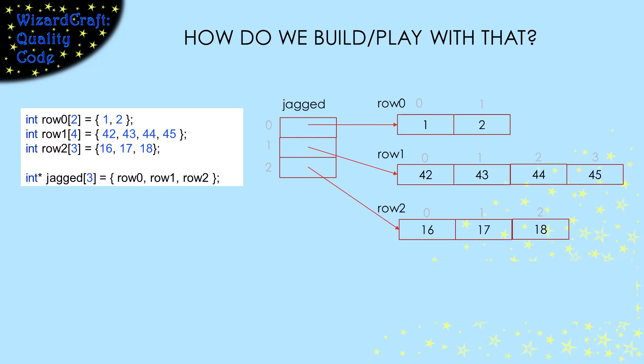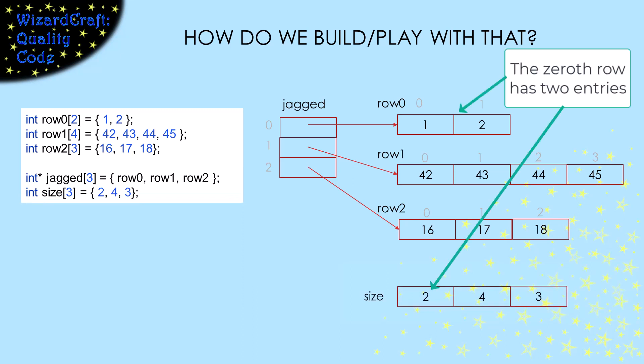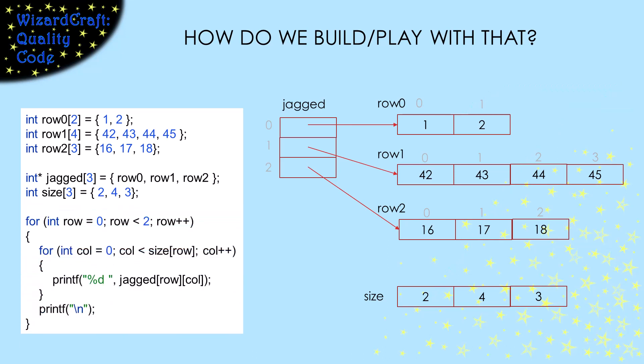As with one-dimensional arrays, we need some way to know how long each row is. One option is to have an array to hold the sizes of each row. Since we have three rows, that array will have three sizes. Just like with rectangular arrays, we can use nested loops to walk through the whole array. Notice that it lets us index the array the same way we did for rectangular arrays. We just have to use the size array to stop the inner loop so it runs the right number of times for each row.